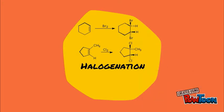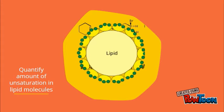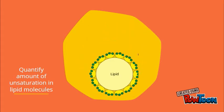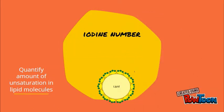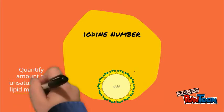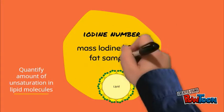In the food industry, halogenation of alkenes is performed to have a quantitative estimate of the amount of unsaturation in lipid molecules. This is normally expressed as the iodine number — the mass of iodine absorbed per 100 grams of sample of fat or oil.